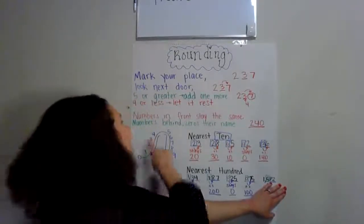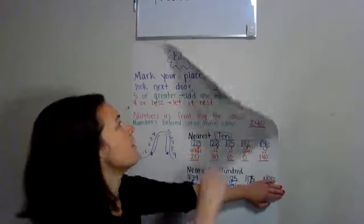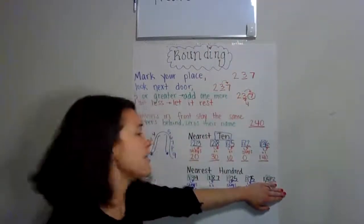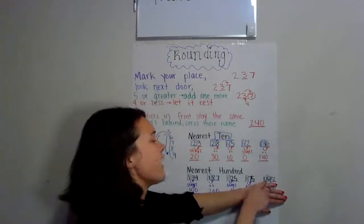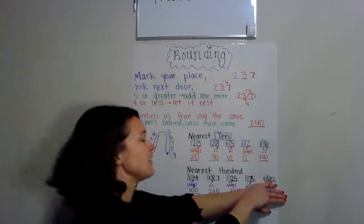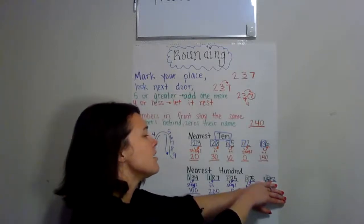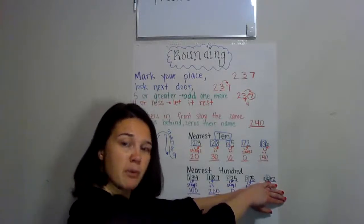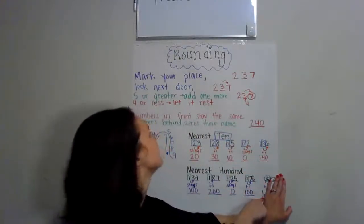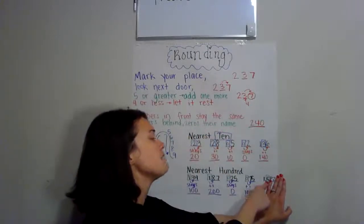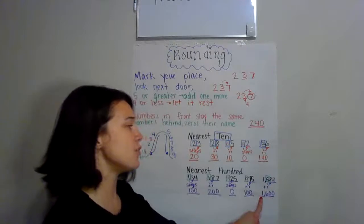Last one — here's where 'numbers in front stay the same' comes into play. So we're still rounding to the nearest 100. We're going to find the hundreds place, which is a five, look next door. Is that eight — five or bigger? Five or bigger. So we're going to add one more. The five will change into a six. But what will happen with the one? Numbers in front stay the same, so that one will drop down. Numbers behind, zero is their name. The five is going up to six, and we have zero, zero. So 1,582 rounds up to 1,600.